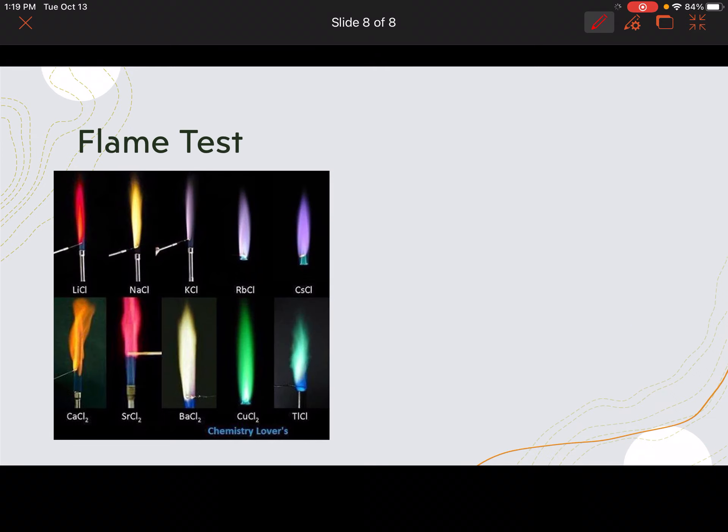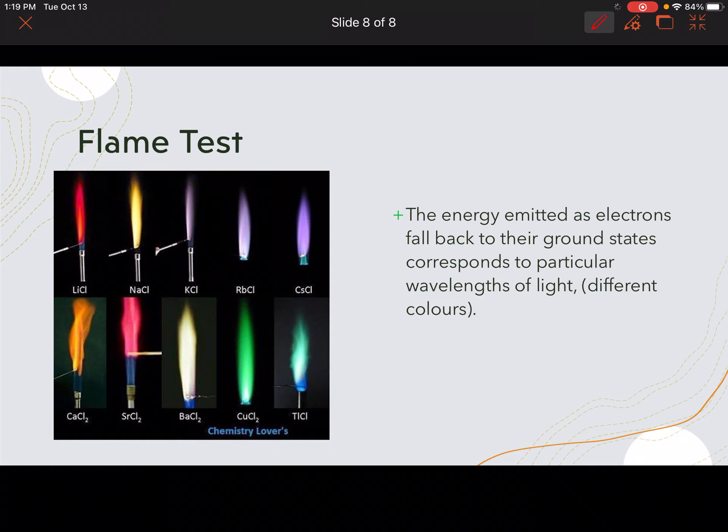Now, flame test. This is what your lab number four is going to be on. So the energy, a flame test is essentially just an emission spectra. We're heating it up. We're supplying energy to different compounds. And then we're seeing what color they are, or what frequencies of light they're emitting as they fall back to their ground state. So the energy emitted as electrons fall back to their ground states corresponds to particular wavelengths of light. And this is why we see our different colors here.